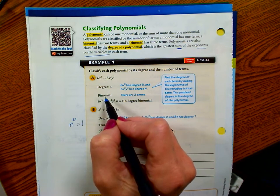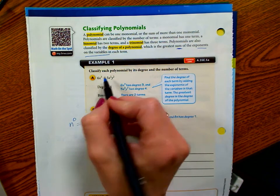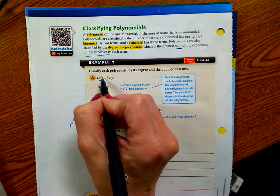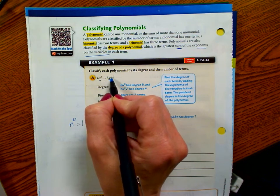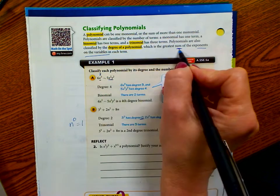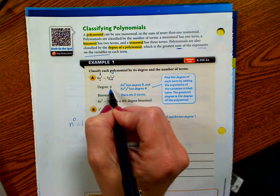So it's a binomial, that's the number of terms, that's how you classify it by number of terms, and now the degree. This variable has an exponent of three. These variables, exponent of two, x squared and y squared. So this has three, and then the sum of the exponents, two plus two, is four. So the degree is four.